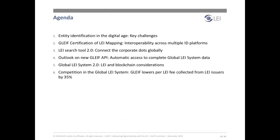We'll then move into mapping. To conduct business digitally, counterparties must be identified without ambiguity. Many businesses use mapping solutions to do this — matching entity identifier A against entity identifier B to ensure that both are recognized as referring to the same organization. During this presentation, we'll describe the GLEIF mapping certification process. We'll also introduce the enhanced LEI search tool 2.0, and take a look at the NextGLEIF API. We'll also report on next steps towards assessing whether distributed ledger technology could be leveraged for data collection and distribution in the global LEI system.